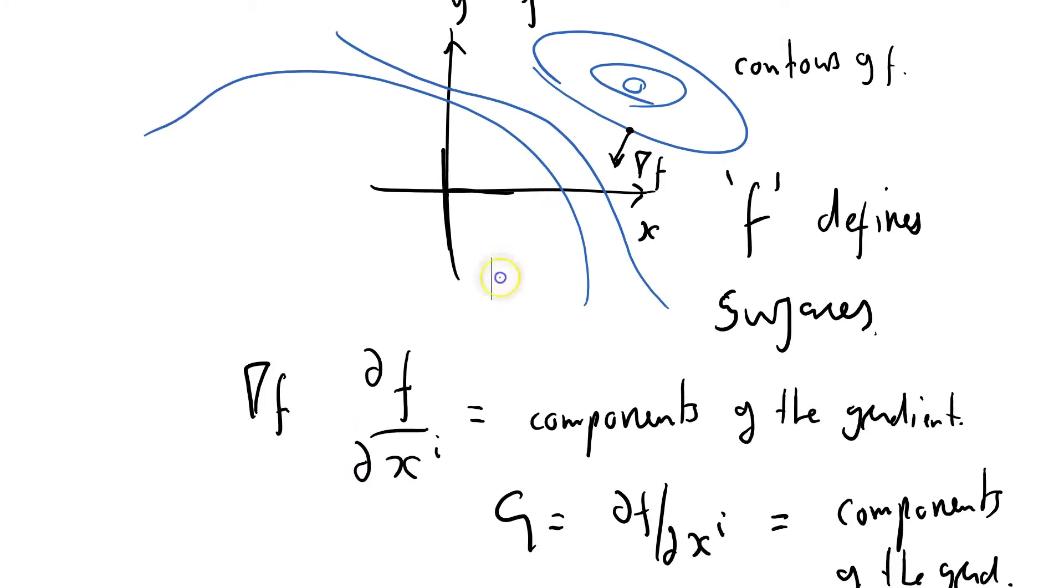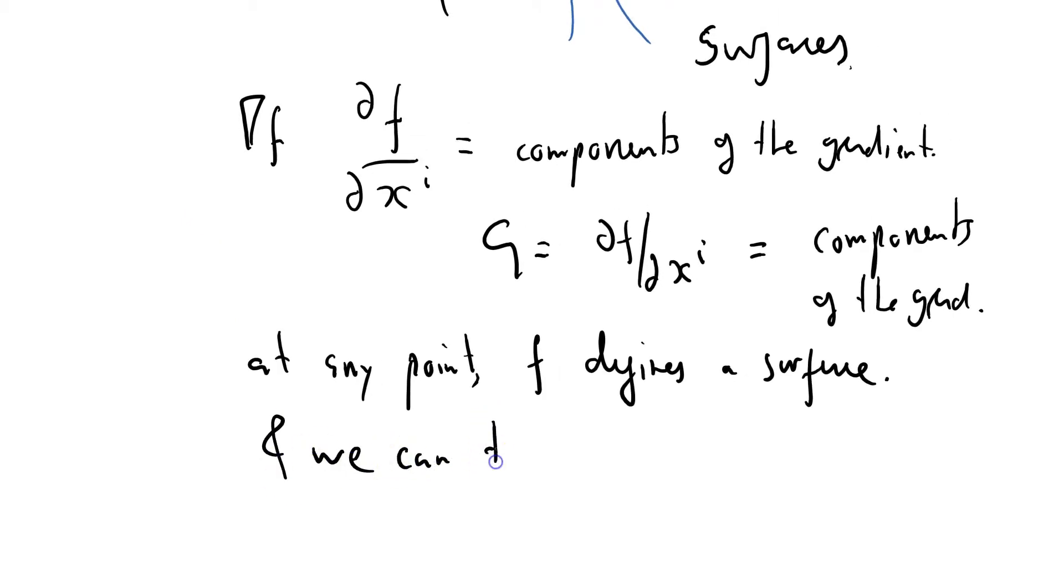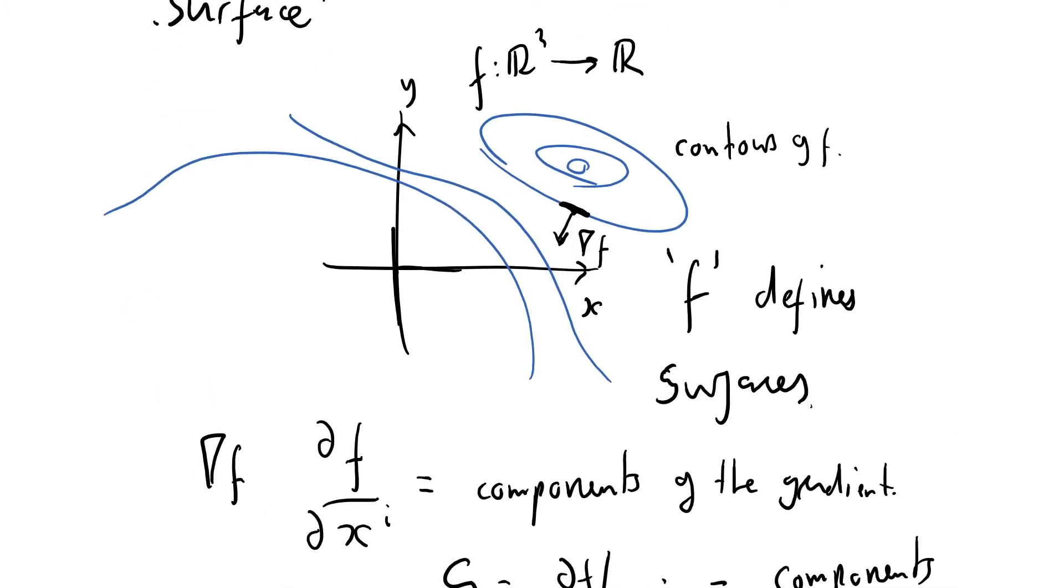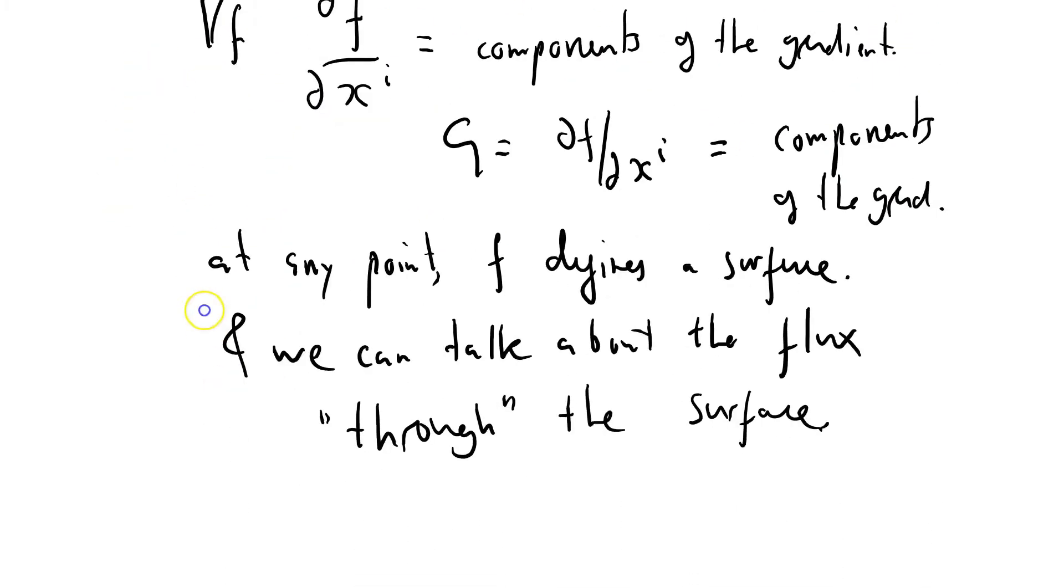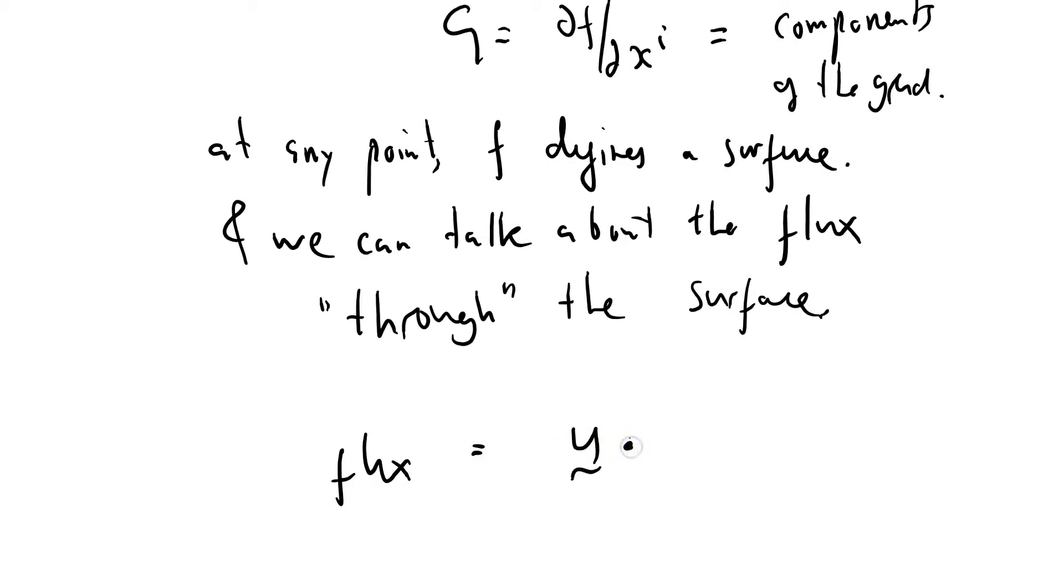So this defines a little surface here, the surface at right angles to it. At any point, f defines a surface, just a little element of surface. And we can talk about the flux through that surface. And again, I'll put it in scare quotes and you'll see why in a minute. Through the surface. So flux of what? Well, we'll set up a little velocity field in here, and there might be water or some kind of fluid zooming along here, and that's got speed u. So the flux through any particular surface is just going to be a dot product. The flux equals u dot, well it's just the gradient.